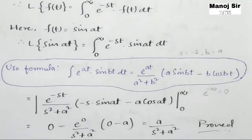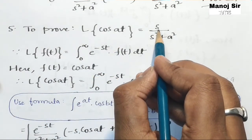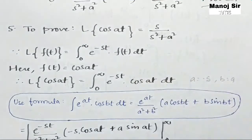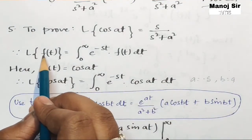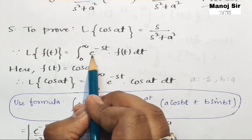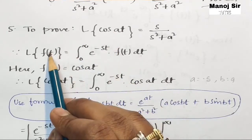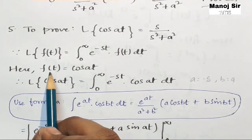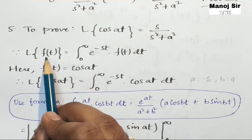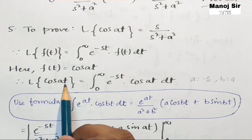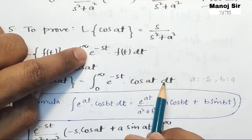Now coming to the second part: we need to prove that the Laplace transform of cos(at) equals s upon s² plus a². Again by taking the help of the definition of Laplace transform, L{f(t)} = integration from zero to infinity of e^(−st) into f(t) dt. Comparing, f(t) is cos(at). Therefore, L{cos(at)} = integration from zero to infinity of e^(−st) into cos(at) dt.